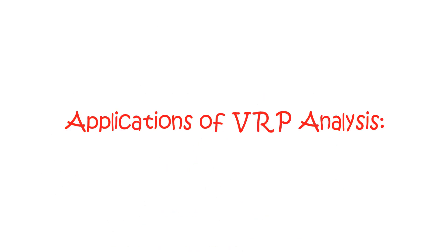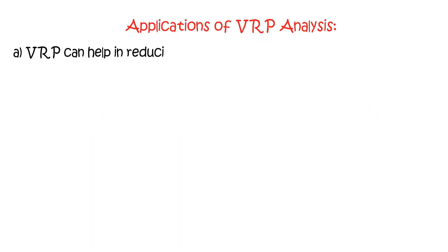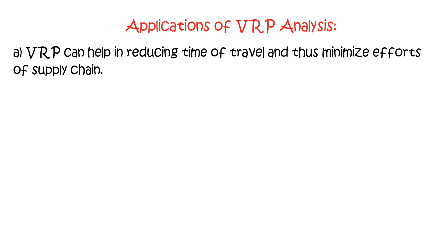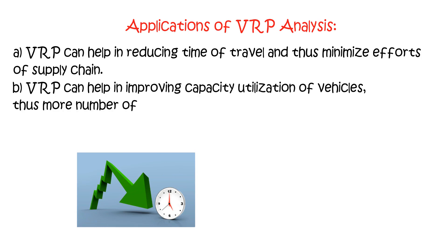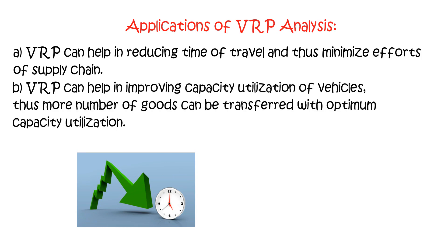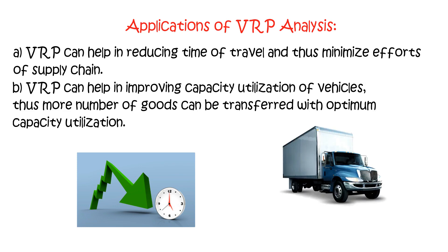The applications of VRP analysis are as follows. Firstly, VRP can help in reducing time of travel and thus minimize efforts of the supply chain. Secondly, VRP can help in improving capacity utilization of vehicles, so more goods can be transferred with optimum capacity utilization.